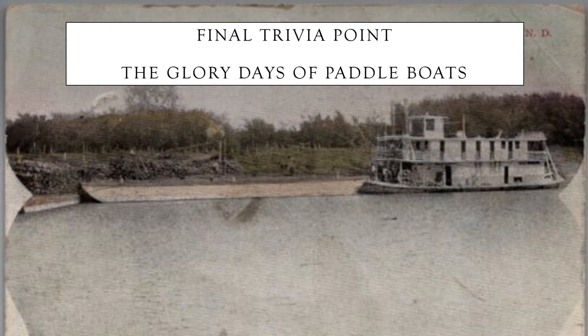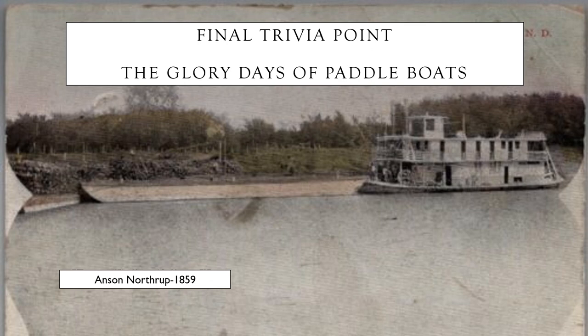Between these two canoe periods, there is a brief period when steam-powered paddle boats churned up and down the Red River. The first paddle boat in the river was the Anson Northrup, which made the trip from Breckenridge to Fort Garry, which would become Winnipeg. The last paddle boat left Grand Forks in 1910, and this fifty-year span of the glory days of paddle boats came to an end, replaced by rail and car.